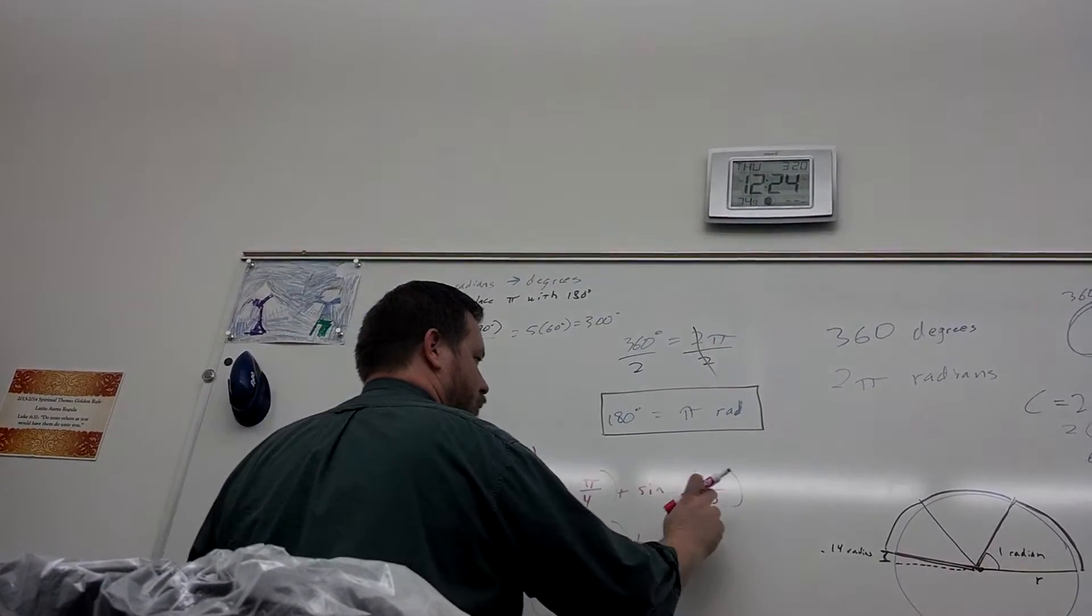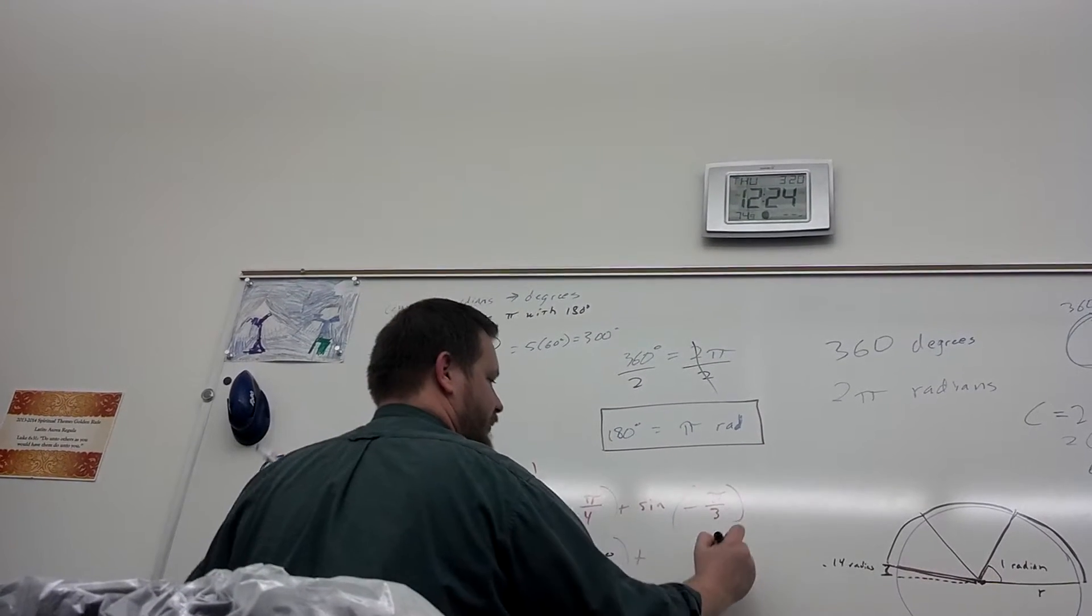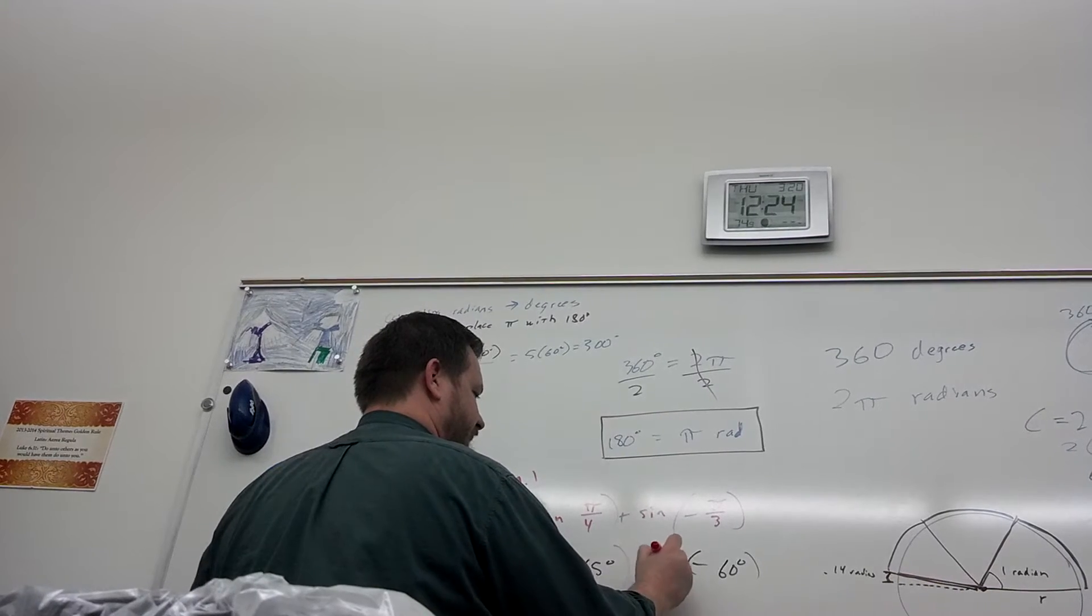Plus... What's pi over 3? 60. 60. 60 degrees. Negative 60. What's the sine of negative 60 degrees? Doug. Negative 4. 60 degrees.